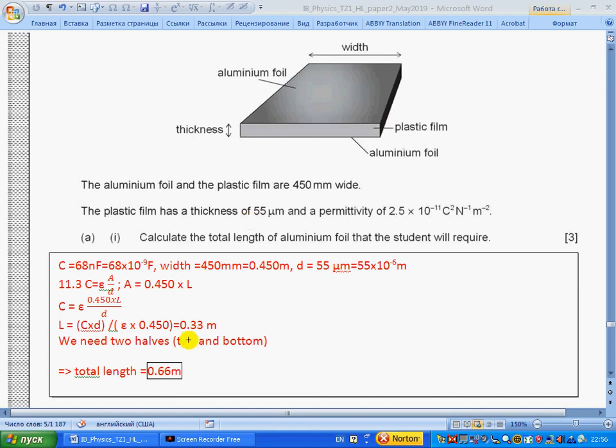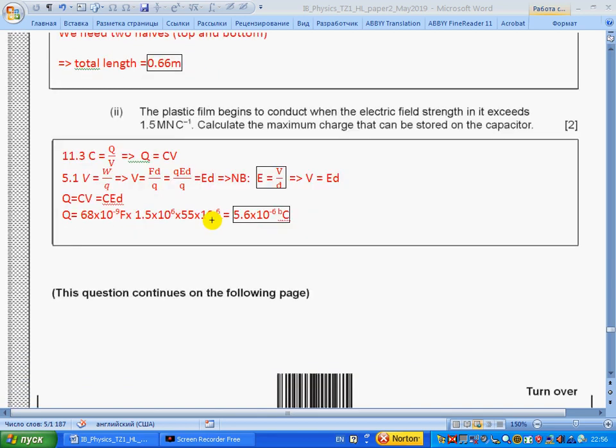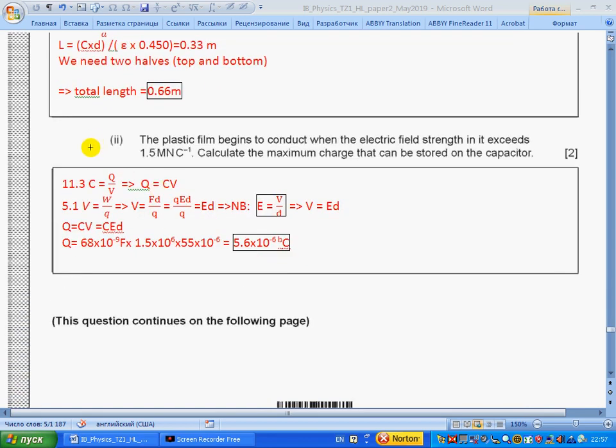From this formula for capacitance, we can find length of the plate. Length of the plate will be 0.33 meters. But because we need two aluminum foil plates, top and bottom, we multiply by 2, we get 0.66 meters. This is the trick of the examiner—we need not only the top but also the bottom, so multiply by 2.